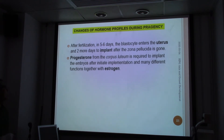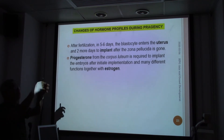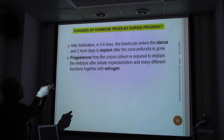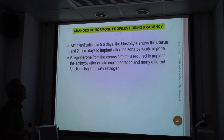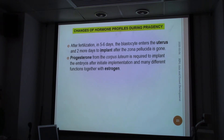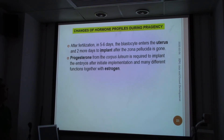Second step: we have progesterone naturally from the corpus luteum. Remember that after ovulation, the corpus luteum would be regressed. At the same time, progesterone comes out and initial implantation happens, along with estrogen facilitating glands to develop on the uterine lining.